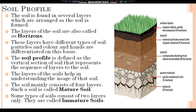The soil mainly consists of four layers. Such a soil is called mature soil. Some types of soil consist of two layers only and they are called immature soil. The different horizons of the soil are: the topsoil or Horizon A, the subsoil or Horizon B, the parent material or Horizon C, and finally the bedrock which is Horizon R.